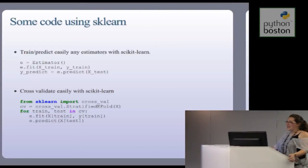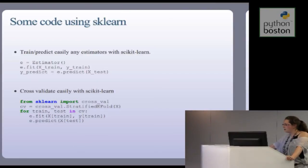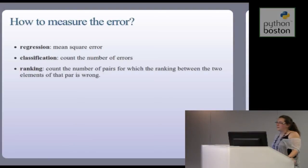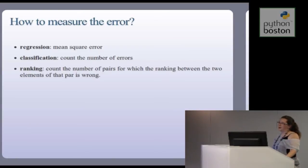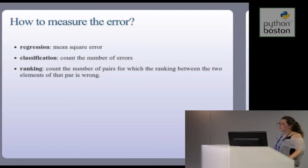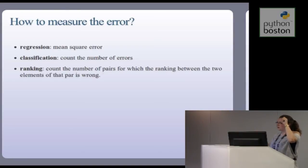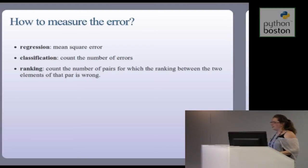How do you measure the error? It depends on the problem. For regression, people use mean squared error, penalizing far-off predictions heavily. For classification — predicting if an image has a car or a person — you simply count errors. For ranking, such as which drug works best on a cancer cell line, you select all pairs and check if the ranking between each pair is correct or not.